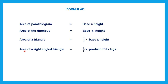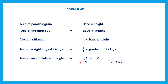Now if you have to find the area for a right-angle triangle, we say half into product of its legs, where we are excluding the hypotenuse — so these are the other two legs. If it is an equilateral triangle, then we say root 3 by 4 into a squared, where a is equal to the side. These are the formulae you must keep in mind and learn how to apply in the questions we're going to do now.